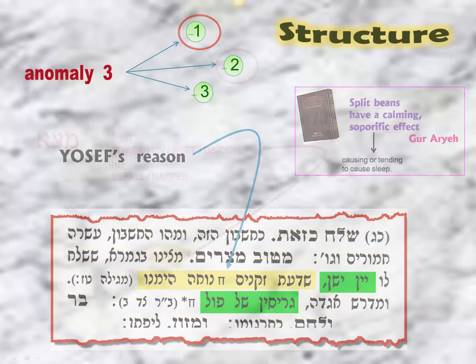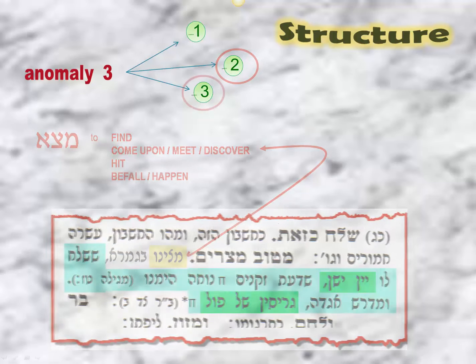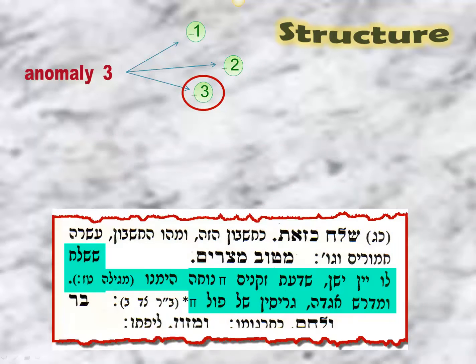A second anomaly is the use by Rashi of the word Matsinu B'Gemara. Matsinu is connected to the Shoresh Mem Tzadik Aleph — meaning to find, to come upon, to meet, to discover. In effect, Rashi is stating that 'we have found in the Gemara that Yosef sent Yayin Yashan as a gift to his father' — a format that is almost non-existent in any of Rashi's commentaries throughout the entire Chumash. He does not counterbalance that with 'Matsinu B'Midrash Agadah.'